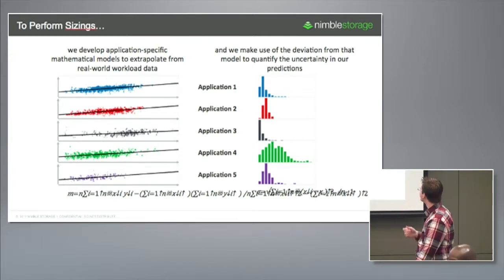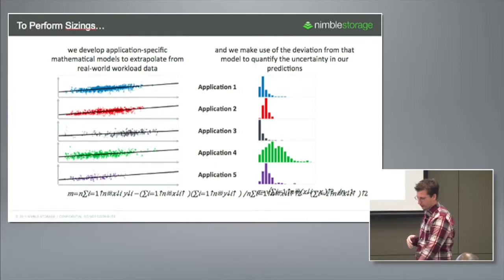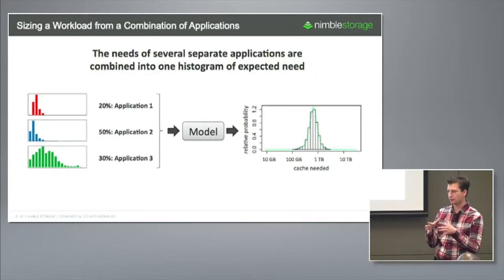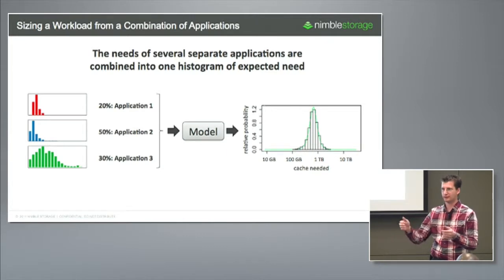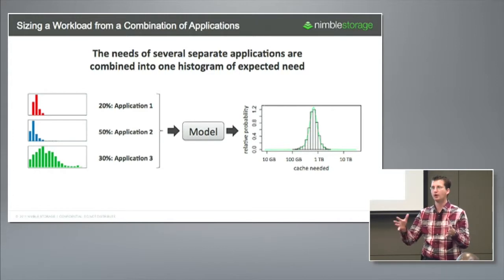Different applications have different uncertainty metrics associated with them, and that's important. As we continue to do sizings, we need to know: given a particular model with a particular set of inputs, do we need more information to do a more precise sizing or not? Because we can look at the install base, we know when that's happening or not.